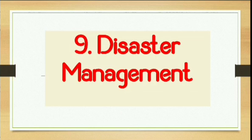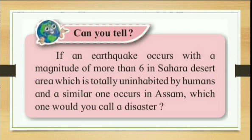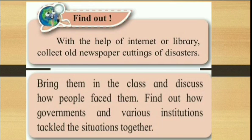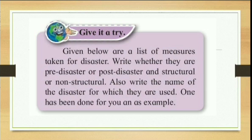Next is Disaster Management — the last chapter. In this case, there is a 'Can You Tell?' section which has been eliminated. Then 'Find Out' — an activity which is also eliminated. Again, 'Use Your Brain Power' — a question that makes you think about why something is so — that is also eliminated.